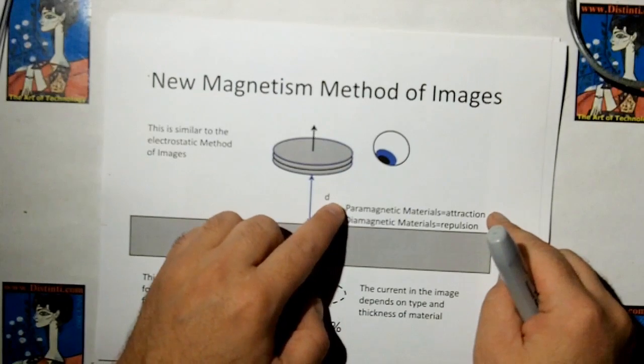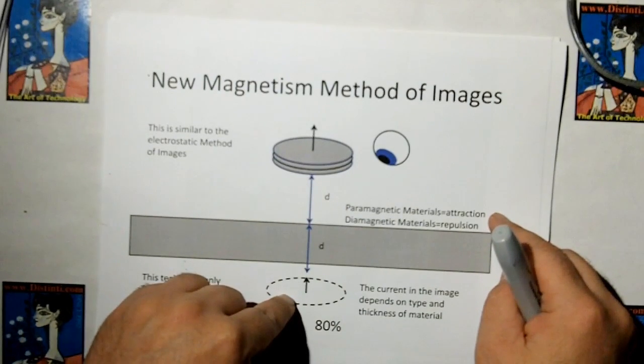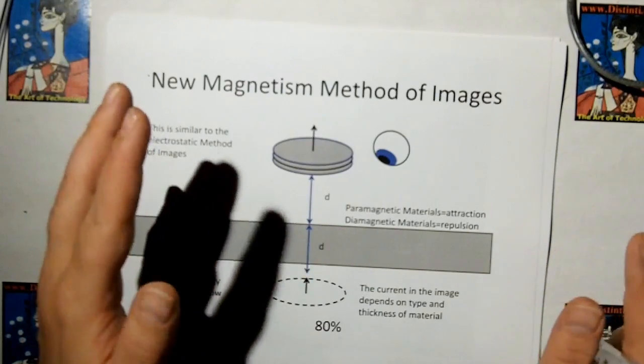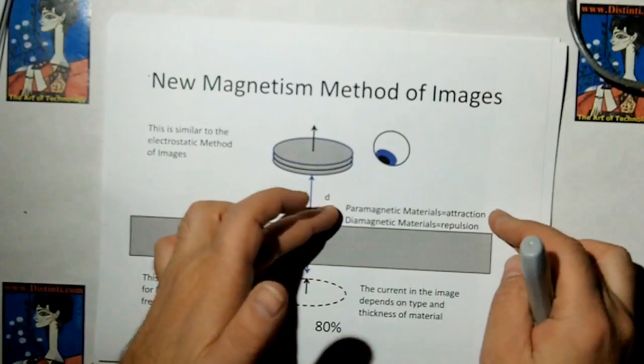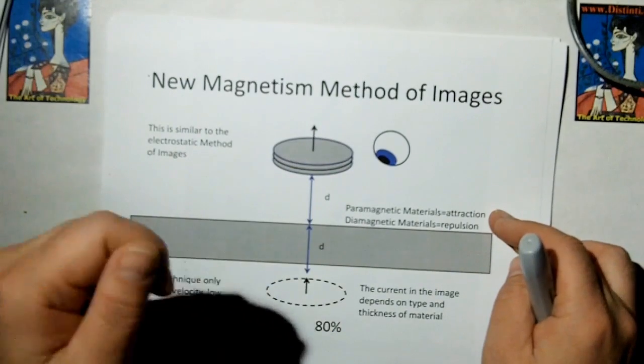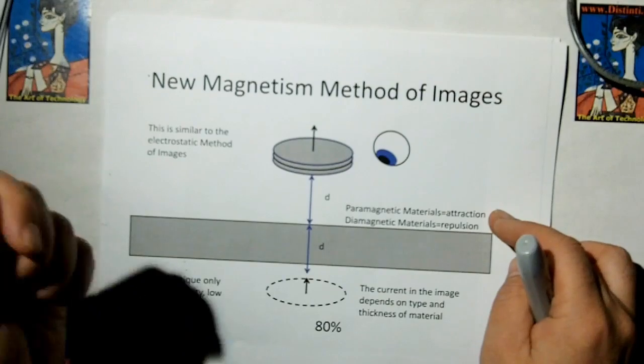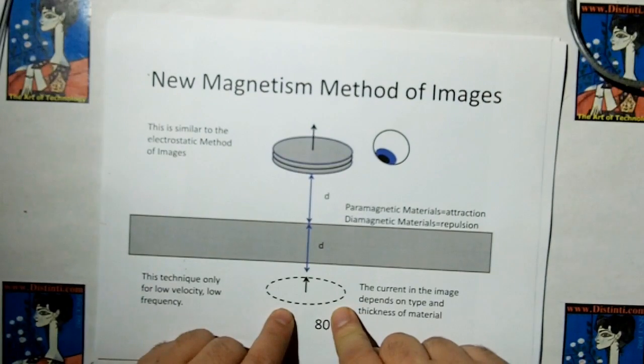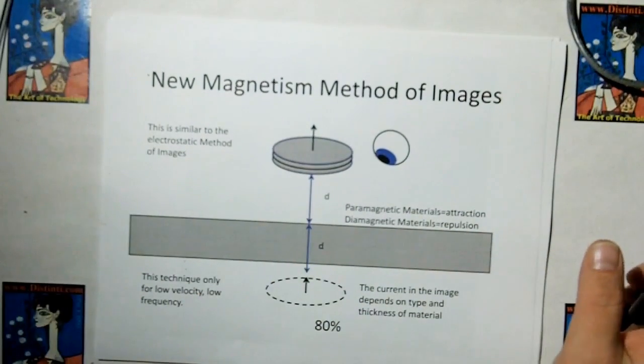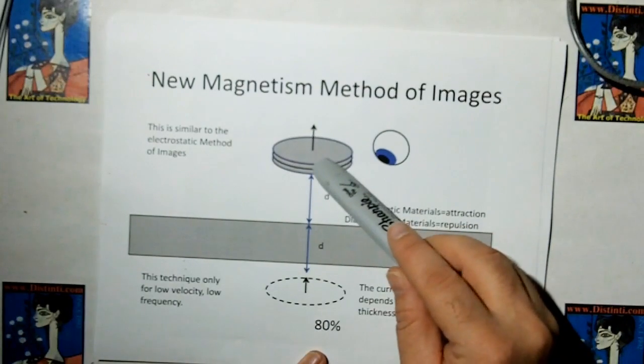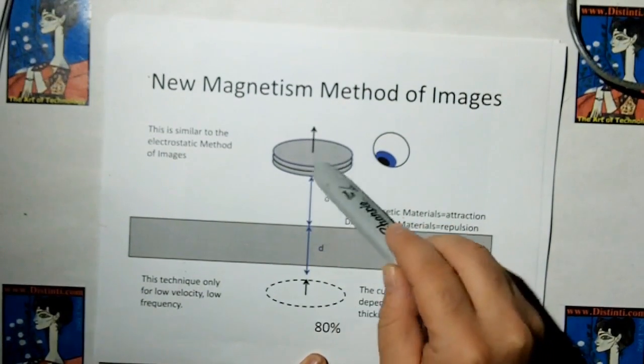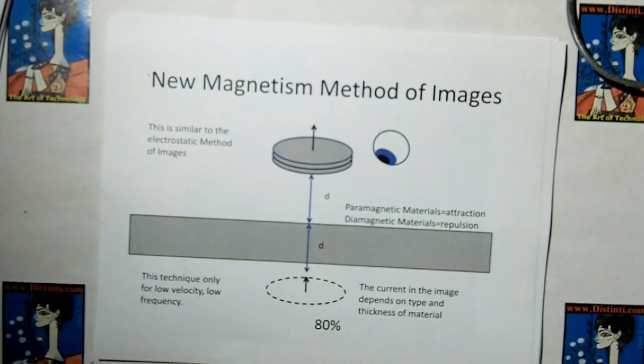Now, this is paramagnetic materials. Paramagnetic materials, you get a positive image. And a paramagnetic material is iron, which is really a ferromagnetic material, which is a paramagnetic material with a hysteresis curve. In other words, a ferromagnetic material can stick and retain its magnetism, where a straight paramagnetic material, once a magnetic field is removed, it goes back to its normal state. A diamagnetic material, which is like a superconductor, the image you get here is negative. If a paramagnetic material causes the magnet to stick, then the diamagnetic material would cause the negative image to repel the magnet.